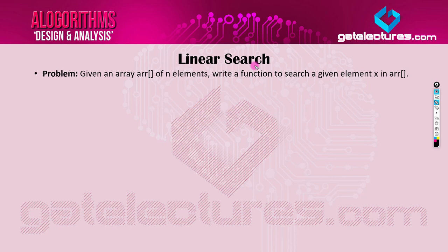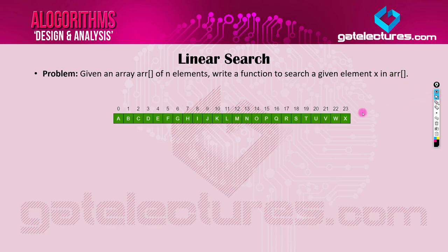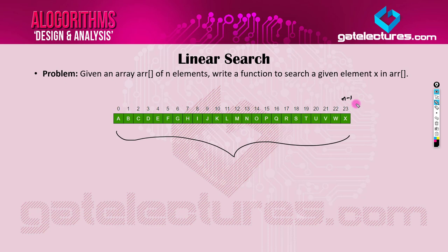The problem statement says: given an array of n elements, write a function to search a given element X in that array. Let's say we have an array with elements at index locations 0, 1, 2, 3, up to n minus 1 — so in total we have n elements. Out of this array, you want to search for a particular element, say element J, and determine whether it exists inside the array.